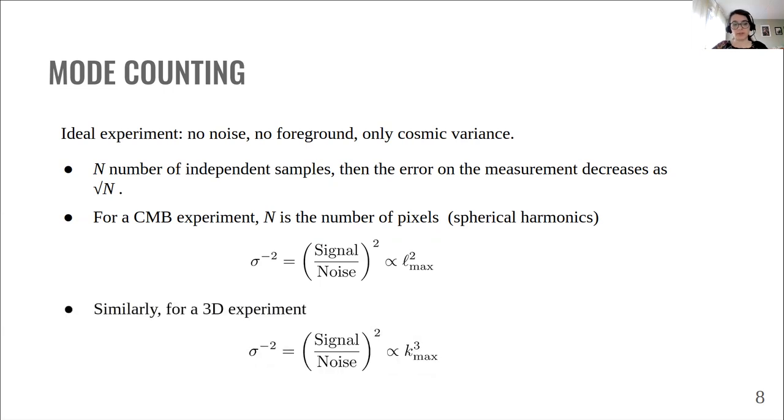Similarly, for a 3D experiment, we get K_max cubed, where K_max in this case is the Fourier equivalent of the smallest observed scale within the survey.